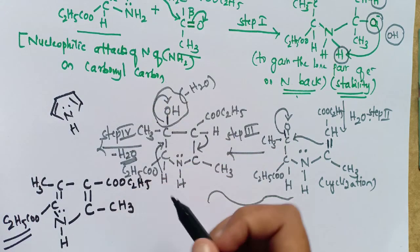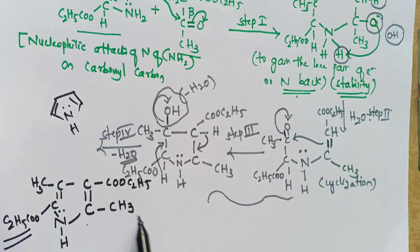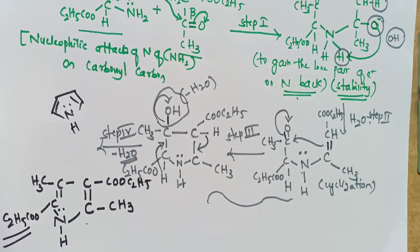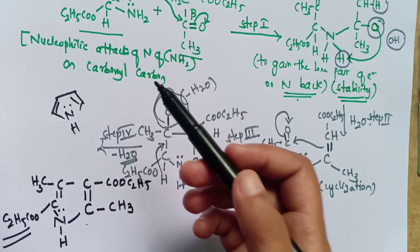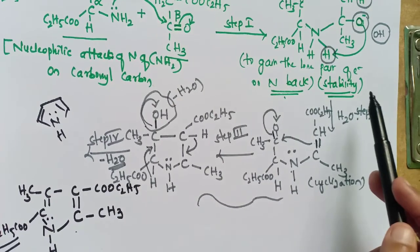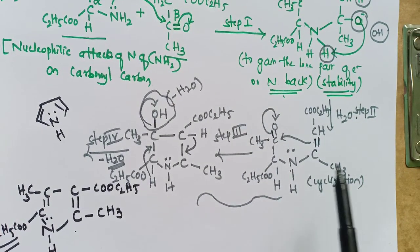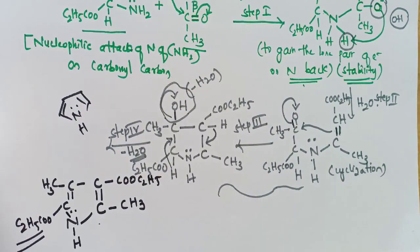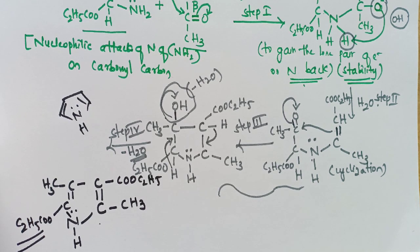These two substituents — CH3 and C2H5-COO — are present on the pyrrole. This is the mechanism to synthesize pyrrole: first, nucleophilic attack on the carbonyl; next, removal of a water molecule; then cyclization; then another removal of a water molecule, giving the pyrrole product. It is a very easy mechanism. Thank you for watching — please subscribe to our channel and share these videos with your friends.